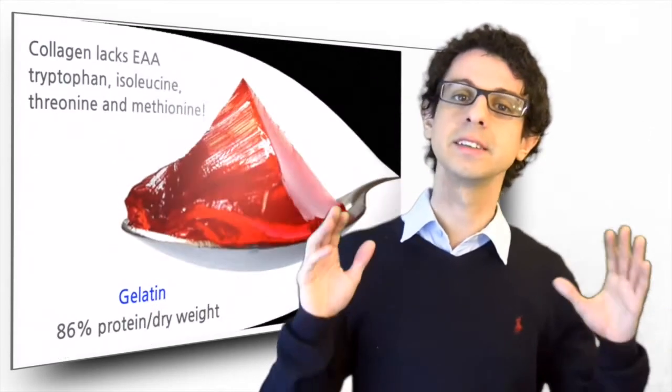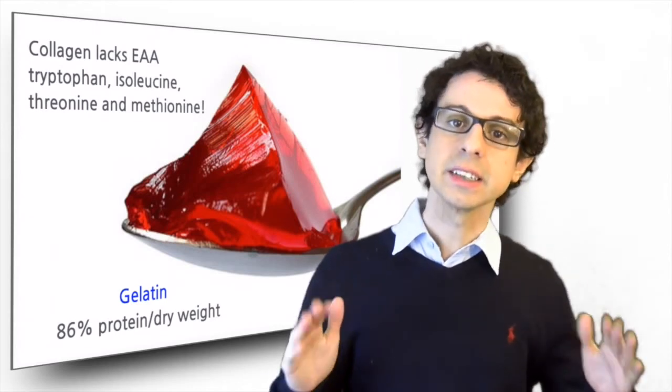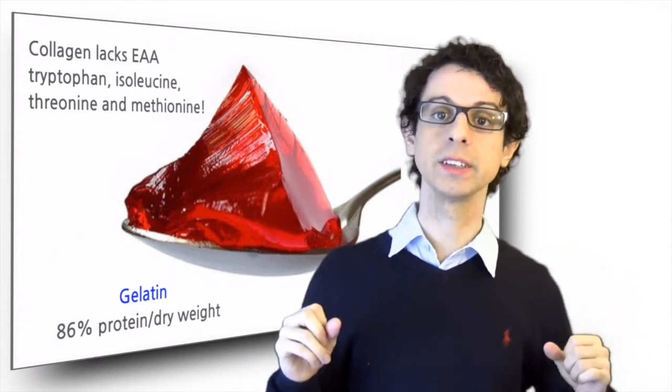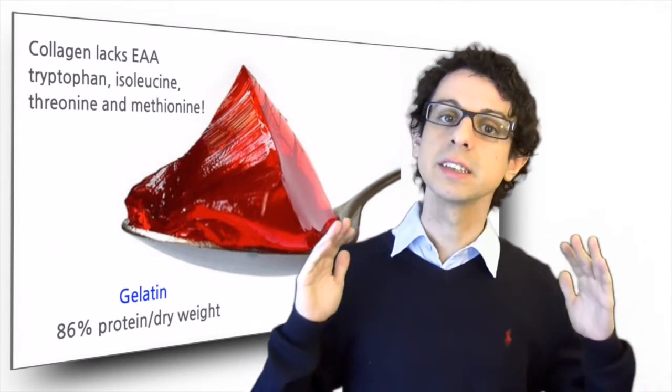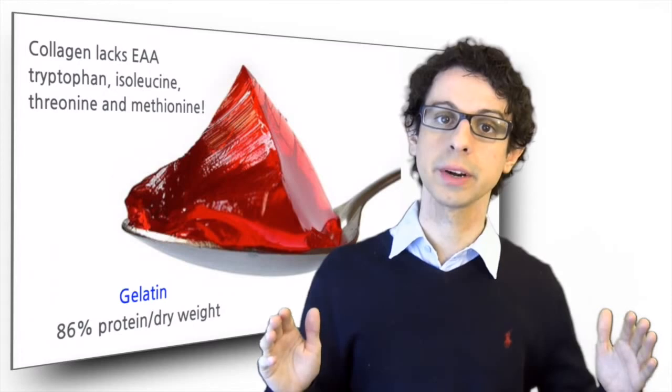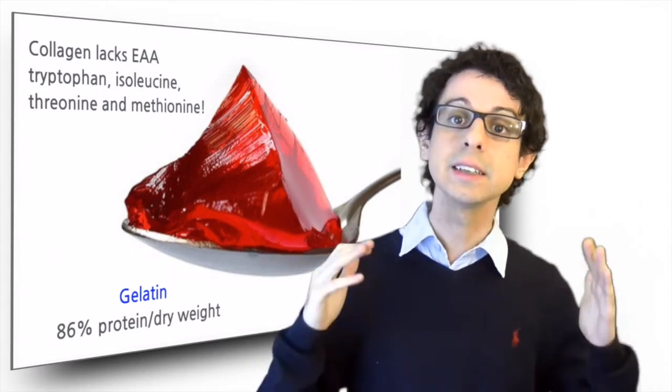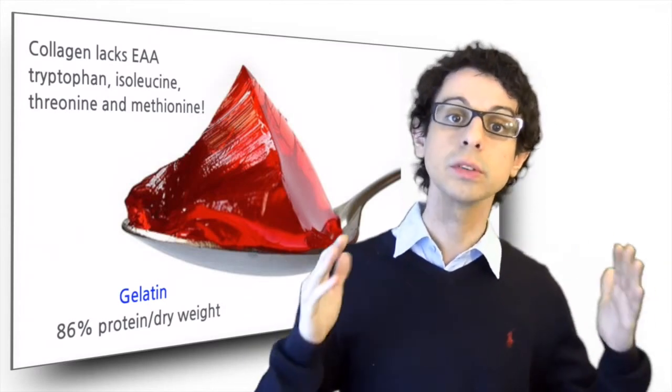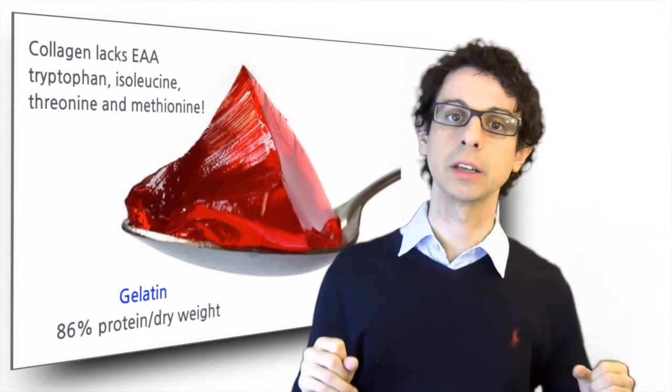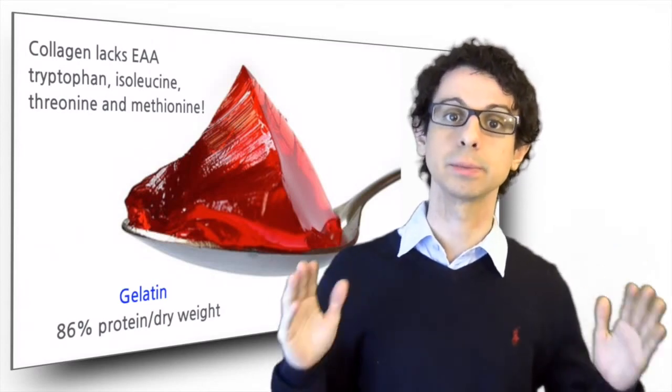This also explains the disappointing results of François Magendie and his dogs fed collagen. Gelatin is a very rich source of protein quantitatively, but the quality of its protein is very, very low because it lacks not one, but four essential amino acids: tryptophan, isoleucine, threonine and methionine. So it doesn't matter that you get a lot of proteins from gelatin, it's protein that you cannot use unless you get those four lacking essential amino acids from somewhere else. The sad end of Magendie's dogs is a good reminder that protein quality is as important as protein quantity.